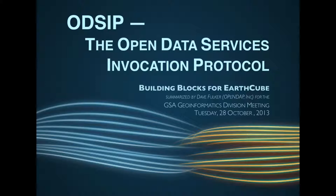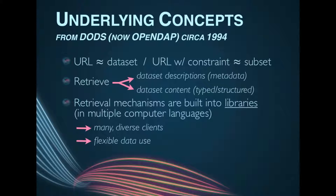ODSIP builds on earlier work, originally dubbed the Distributed Ocean Data System, or DODS, but now called OpenDAP, that realizes several key concepts. One: URLs can correspond to data sets, and the same URLs with constraint expressions represent subsets.